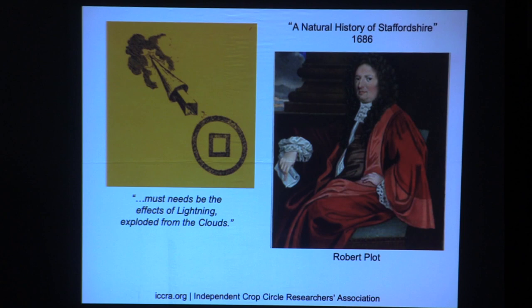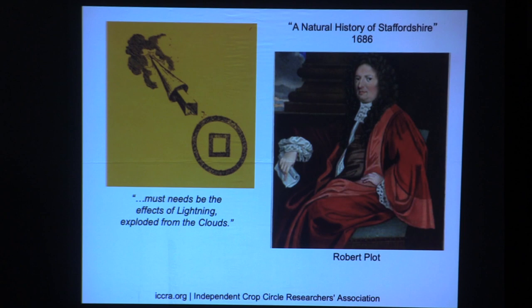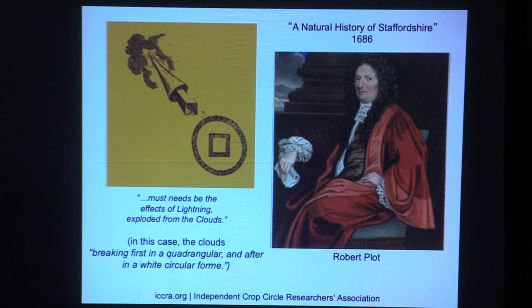In this case, Plott thought it must needs be the effects of lightning exploded from the clouds — he drew a picture — the clouds breaking first in a quadrangular and after in a white circular form. That was the best he could come up with. Who could blame him for trying to figure it out?